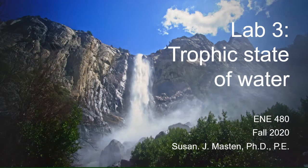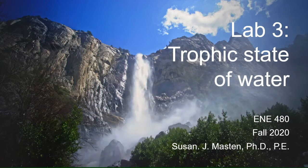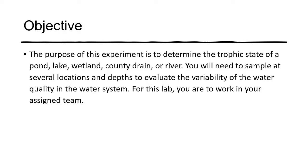Lab 3 focuses on the trophic state of water. The objective will be to determine the trophic state of a pond, lake, wetland, county drain, or river — that is, any body of water. You will need to sample at several locations and depths to evaluate the variability of water quality and to assess the trophic state. For this lab you are to work in your assigned team, the same team from Lab 1.